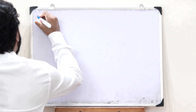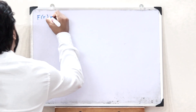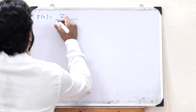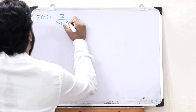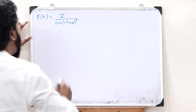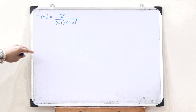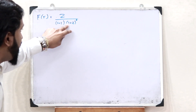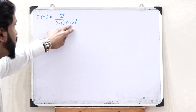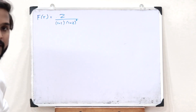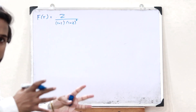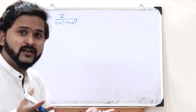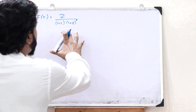Let us find the inverse Laplace transform of a particular function F(s), which is equal to 2 divided by (s+1) times (s+2)². Here we have s+1, but we also have repeating roots — that is (s+2)². This is when we use the properties of partial fractions.